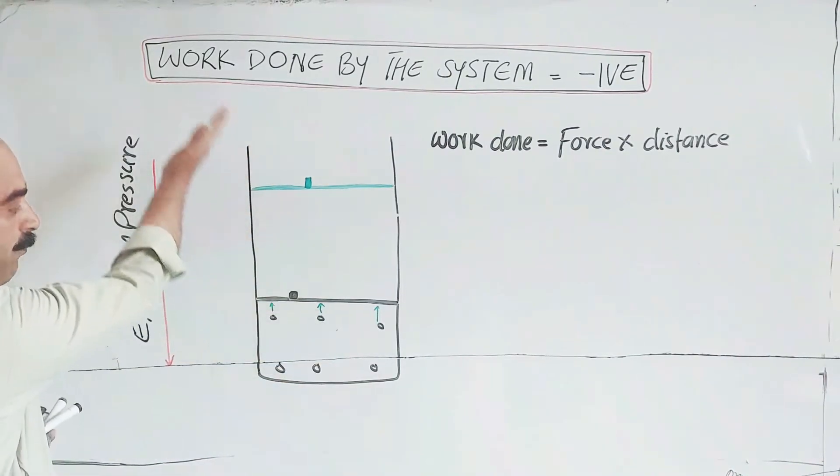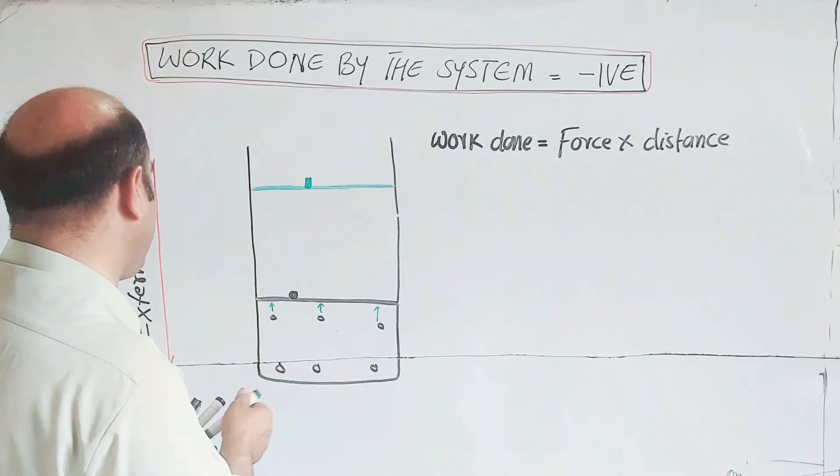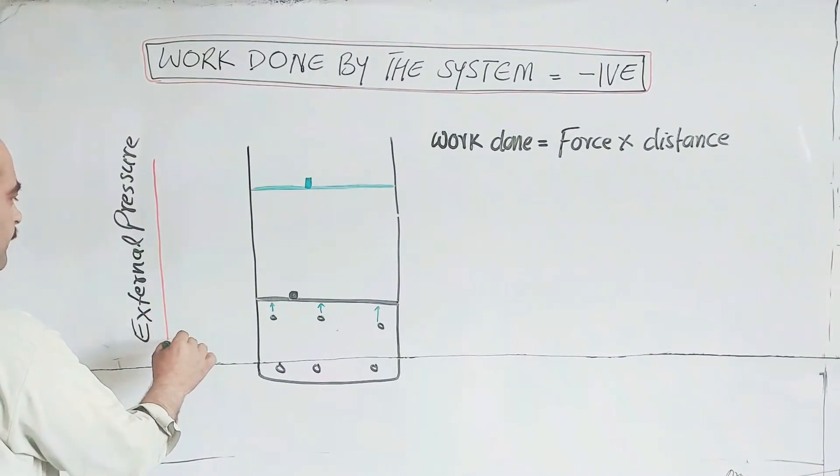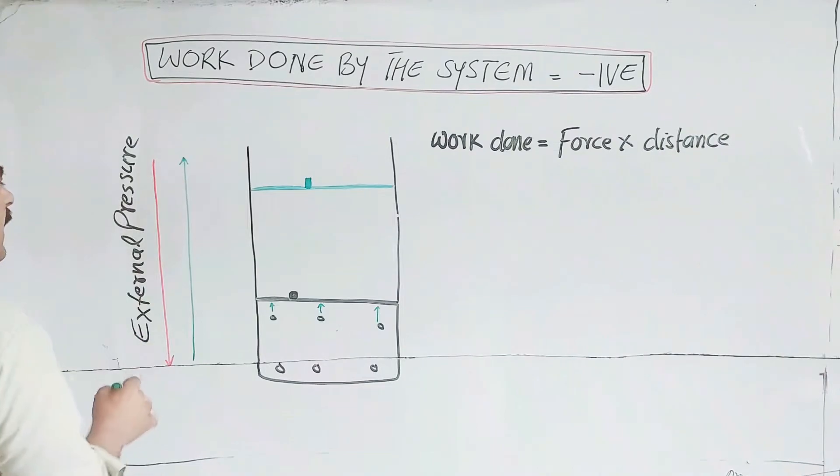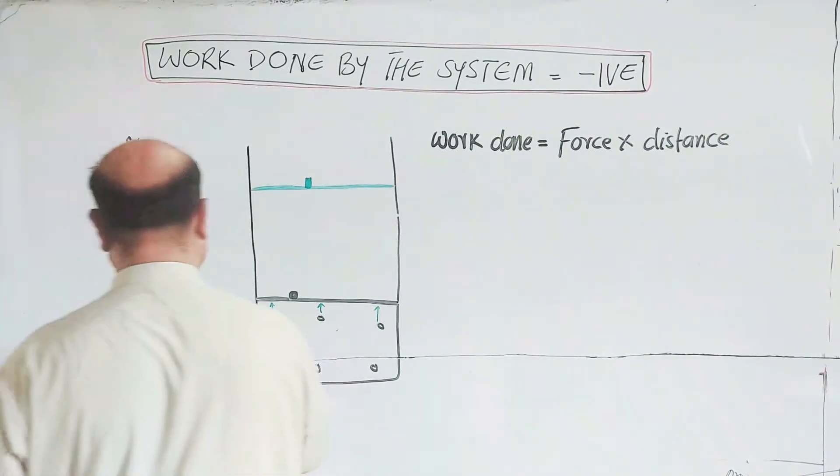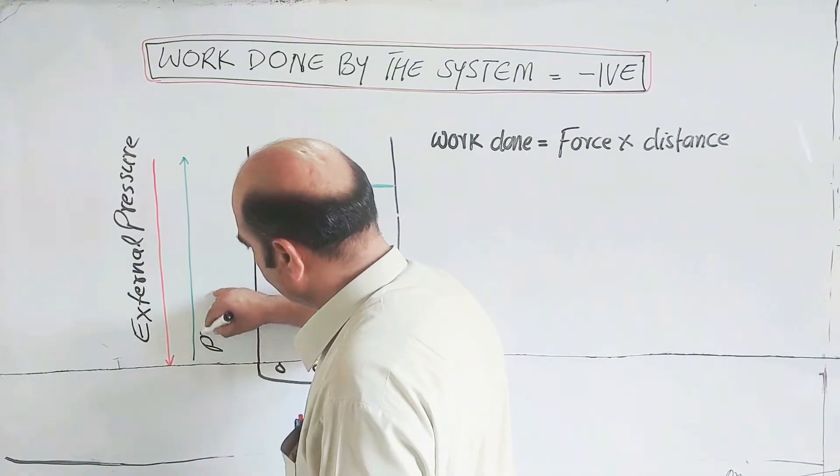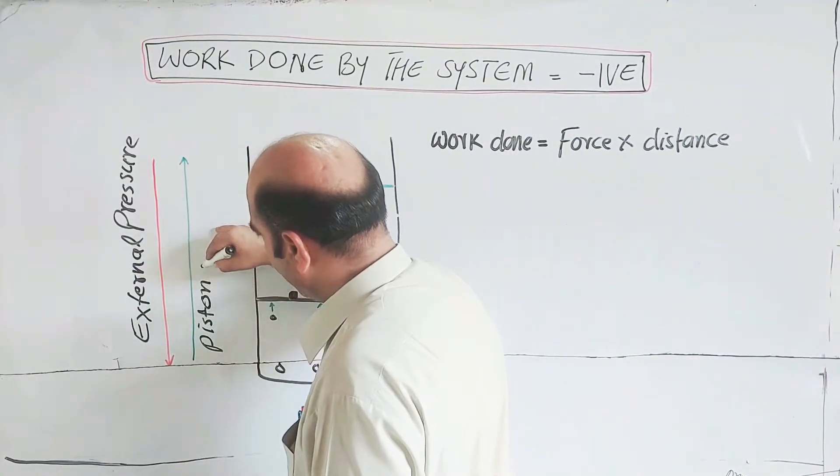Now you have upward piston movement in upward direction. The green lines represent the piston movement. This is piston movement.